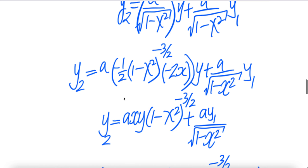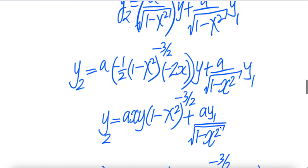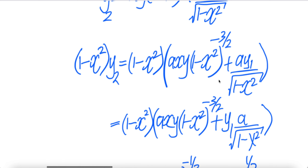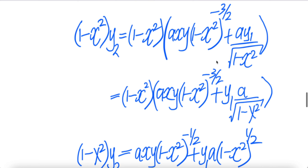Now let us do some cleaning. Minus times minus is positive, the 2's cancel, giving a·x·y times (1 minus x²) to the negative three-halves, plus the other term. Now let us multiply both sides by (1 minus x²). On the left-hand side we get (1 minus x²)·y₂, and on the right-hand side we distribute (1 minus x²) through, moving a over accordingly.